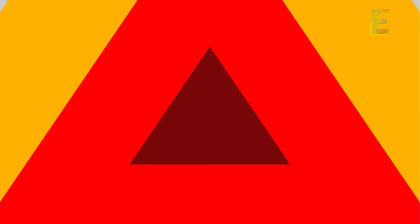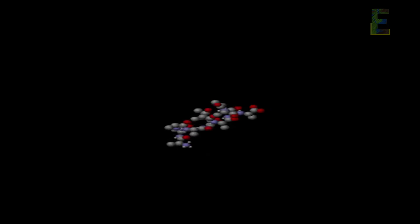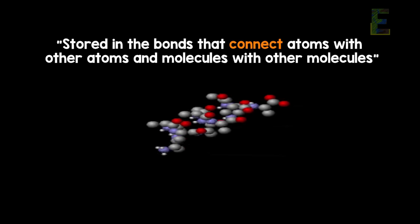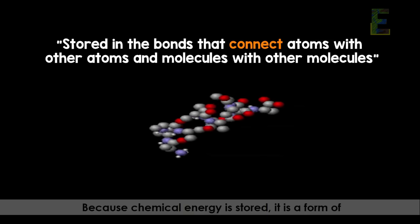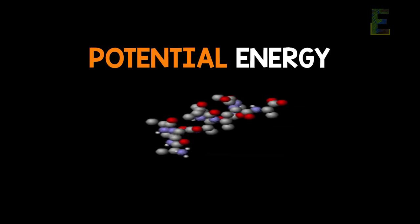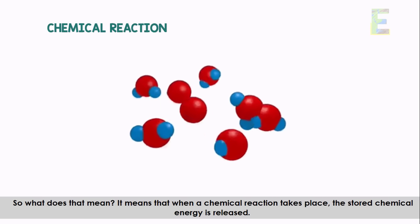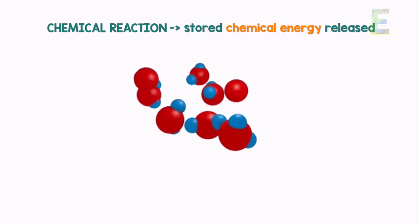Light energy is also used by plants during photosynthesis — plants capture light energy from the Sun and use it to produce their food. Next, we have chemical energy. Chemical energy is stored in the bonds that connect atoms with other atoms and molecules with other molecules. Because chemical energy is stored, it is a form of potential energy. When a chemical reaction takes place, the stored chemical energy is released.